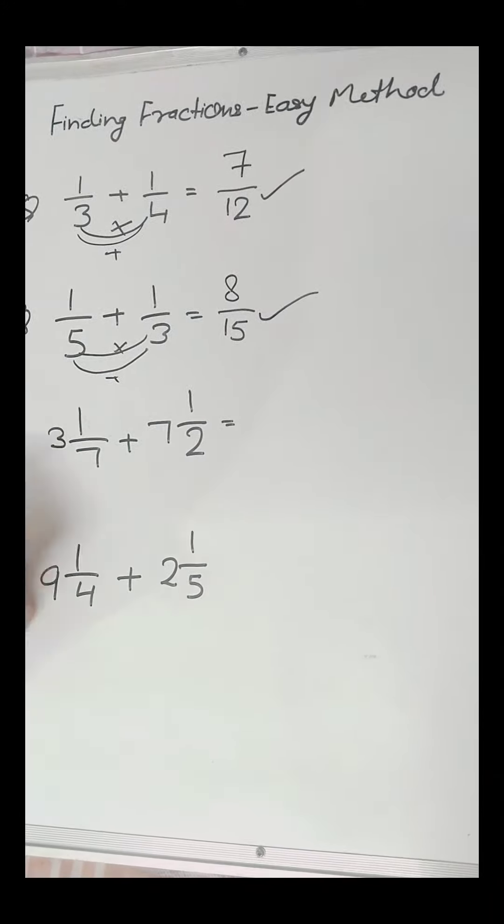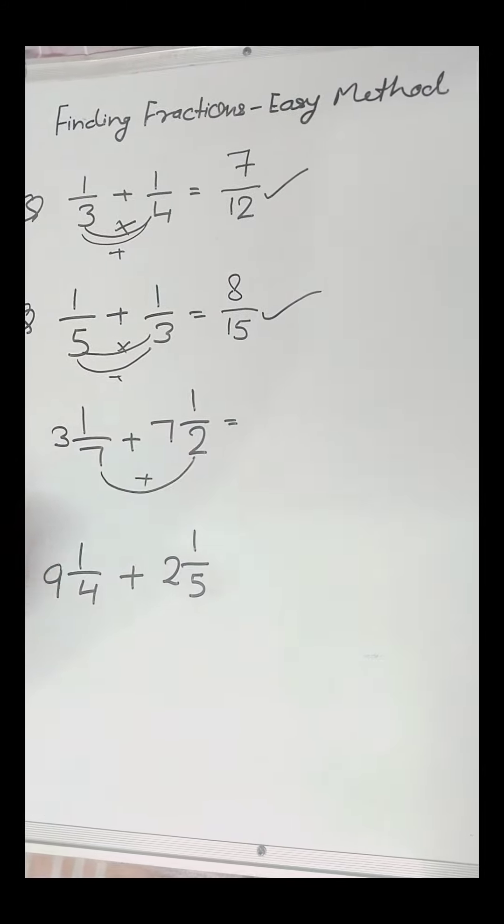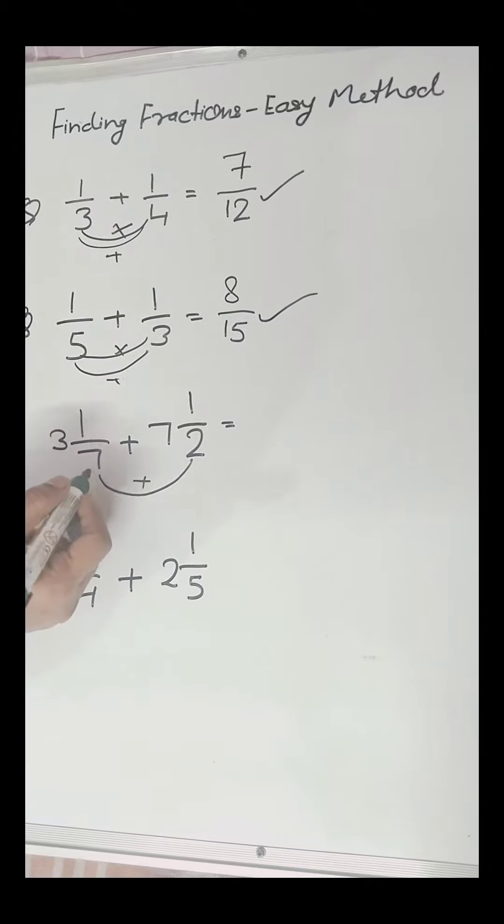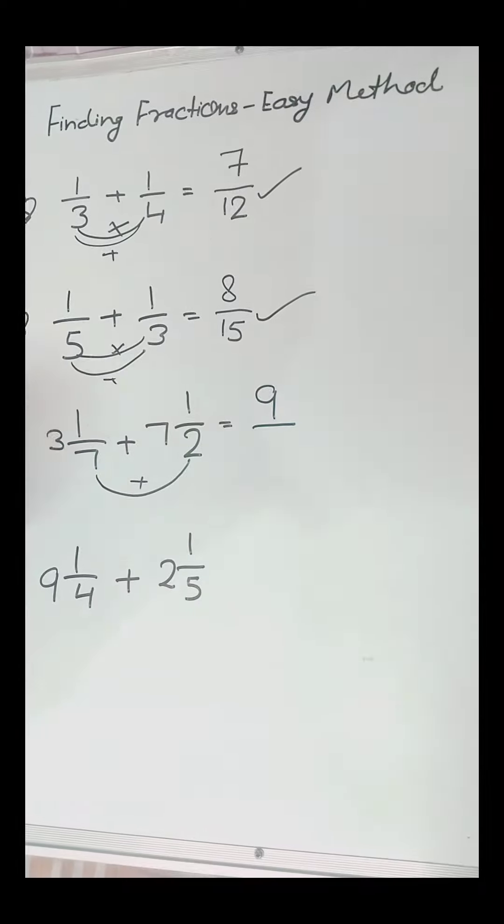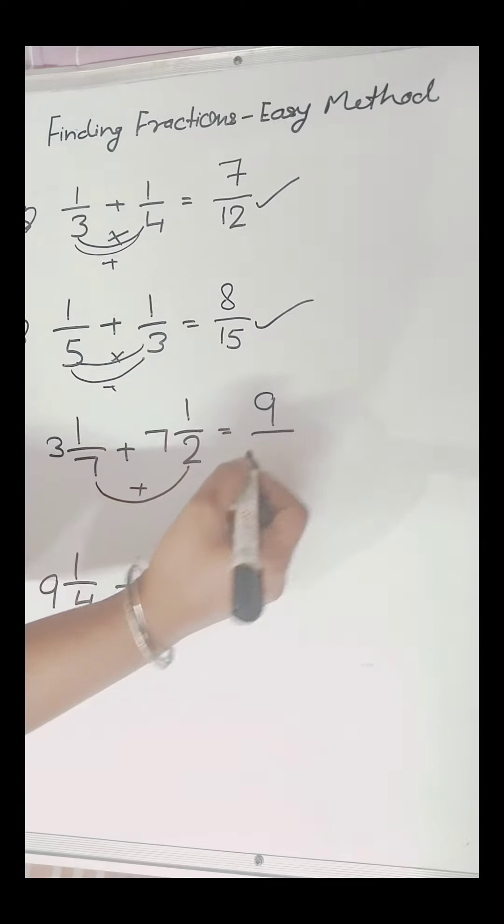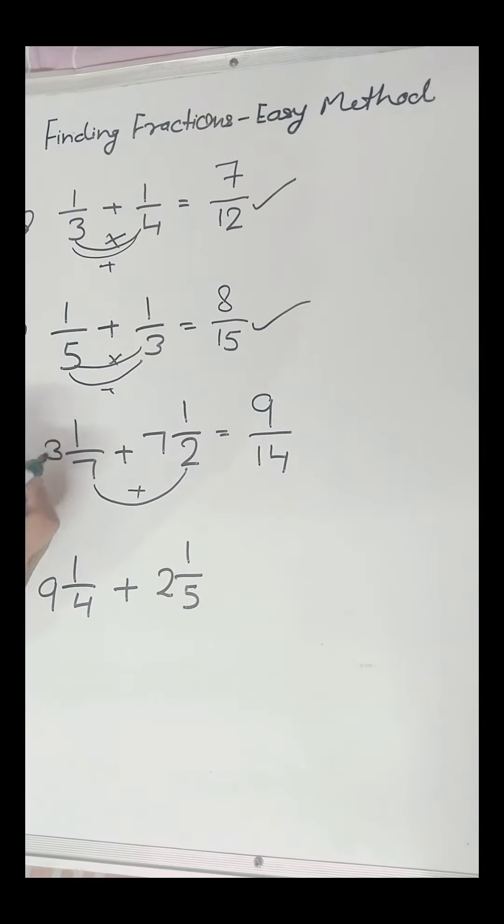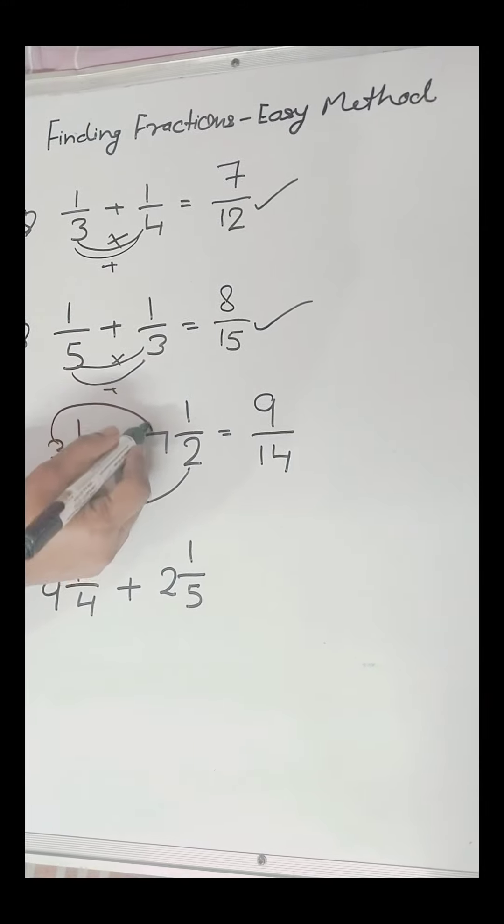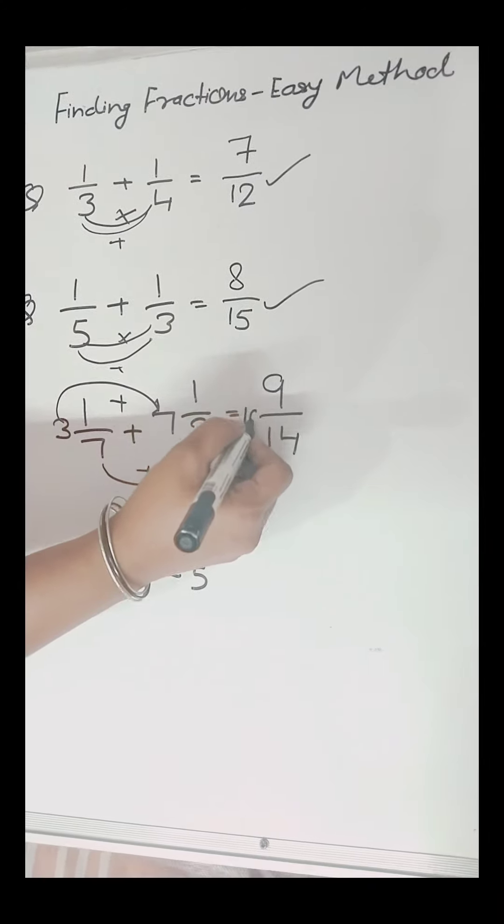Now, to solve mixed fractions, we will first add 7 and 2, then multiply them. The addition is 9 and the multiplication is 14. We will write 9 upon 14, and now we will add this 3 with 7 which equals 10.